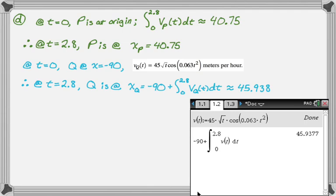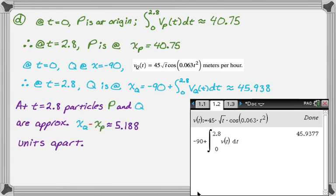And then the question, so three decimals always, the question is approximate the distance between the particles. Well, they're both on the x axis, so if I just subtract their x coordinates, absolute value, or I just know that xQ is bigger. So I'm going to write up my answer. At t equals 2.8, particles P and Q are approximately xQ minus xP, which is approximately 5.188 units apart. So that is question number two. I hope you found this helpful and good luck.